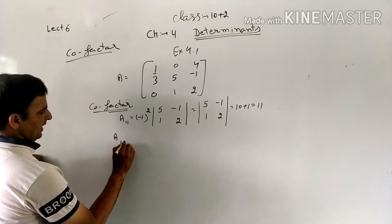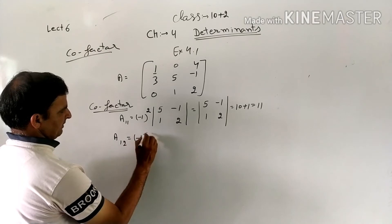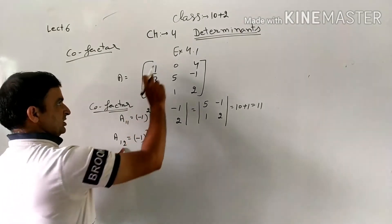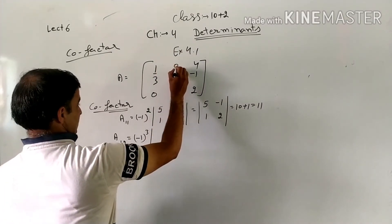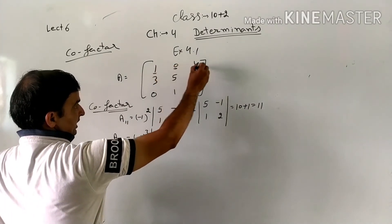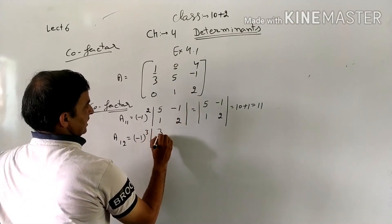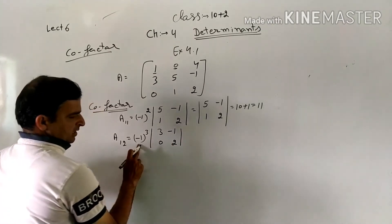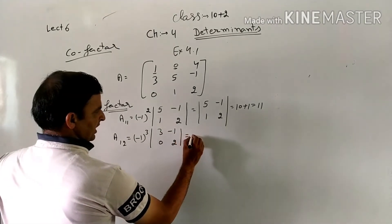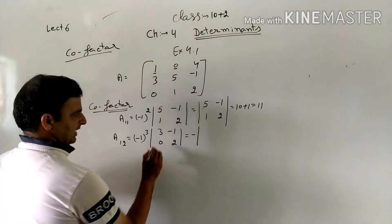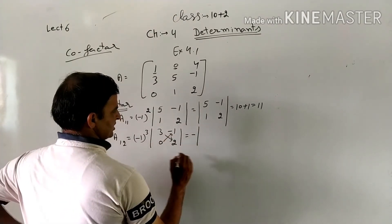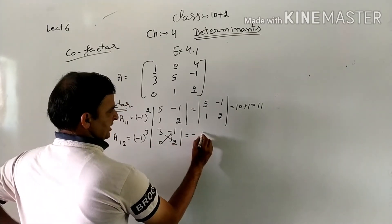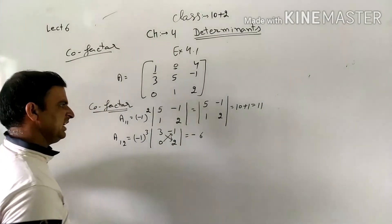A12: (-1)^(1+2) = (-1)^3, so minus sign applies. The element at position 1,2 is 3. Deleting its row and column leaves [0, 1; 4, 2]. Minus × (0×2 - 1×4) = minus × (-4) = 6. But zero makes part unnecessary. The result is -6.